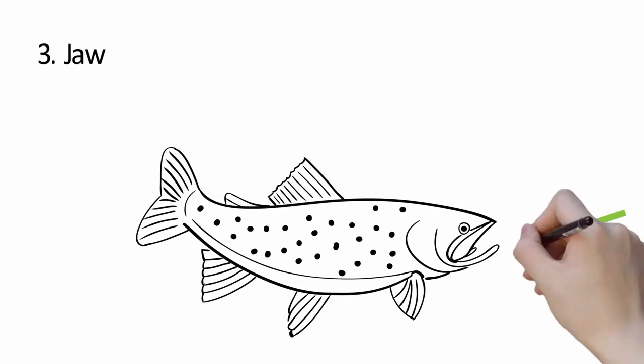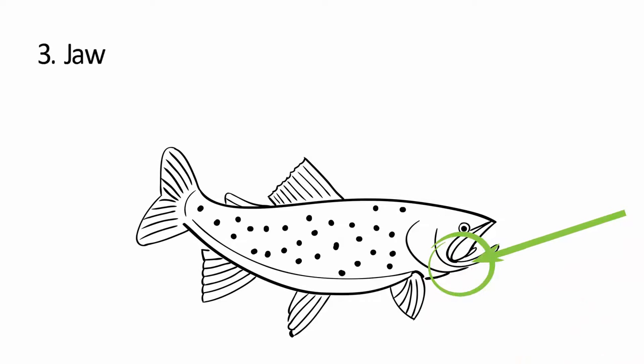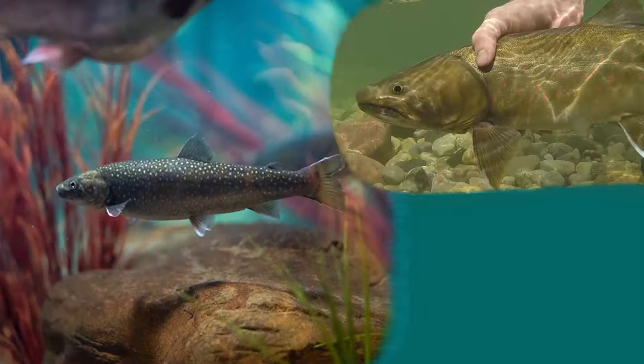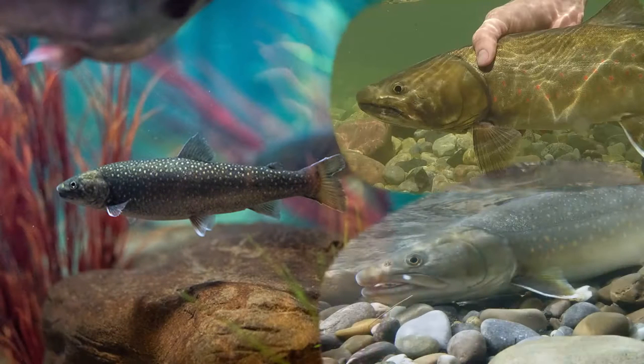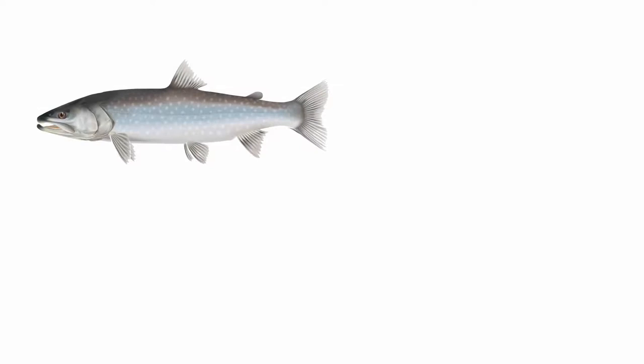Finally, the jaw. Look at the mouth shape and any markings around the jaw. There can be a lot of variation within a species depending on the fish's diet and the time of year. There is also variation between species.